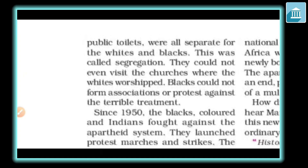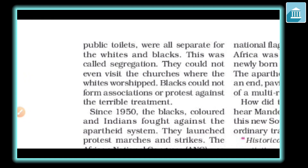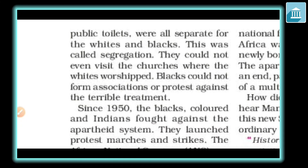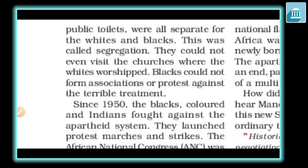All these things were different for white and black people — this was called segregation. You are going to write another important question here: 'Describe the apartheid system in South Africa,' or 'Describe the segregation policy adopted by the white rulers in South Africa.' Black people could not even visit churches where white people went. Black people could not form associations, and they could not protest against their terrible treatment or raise their voices.